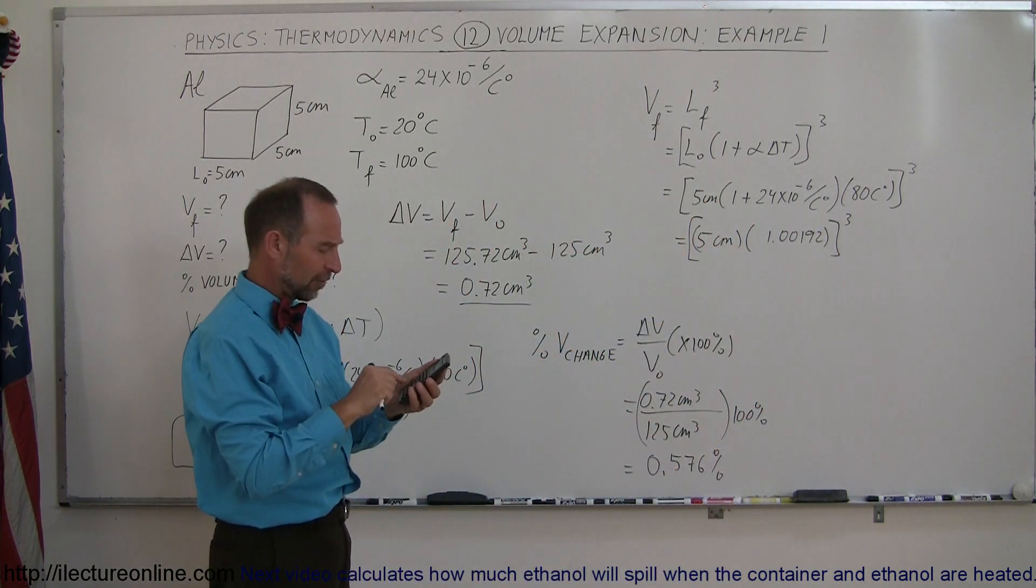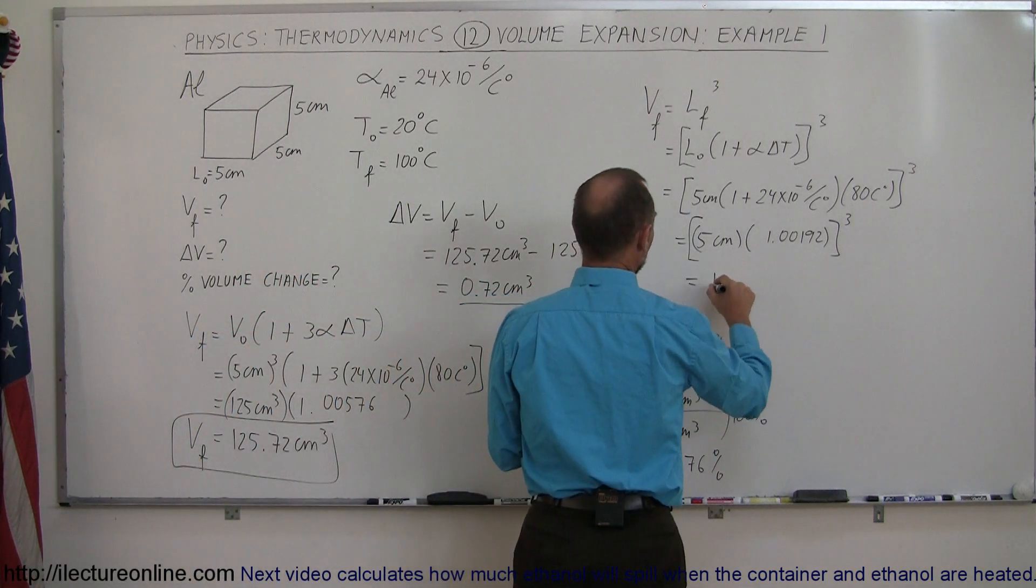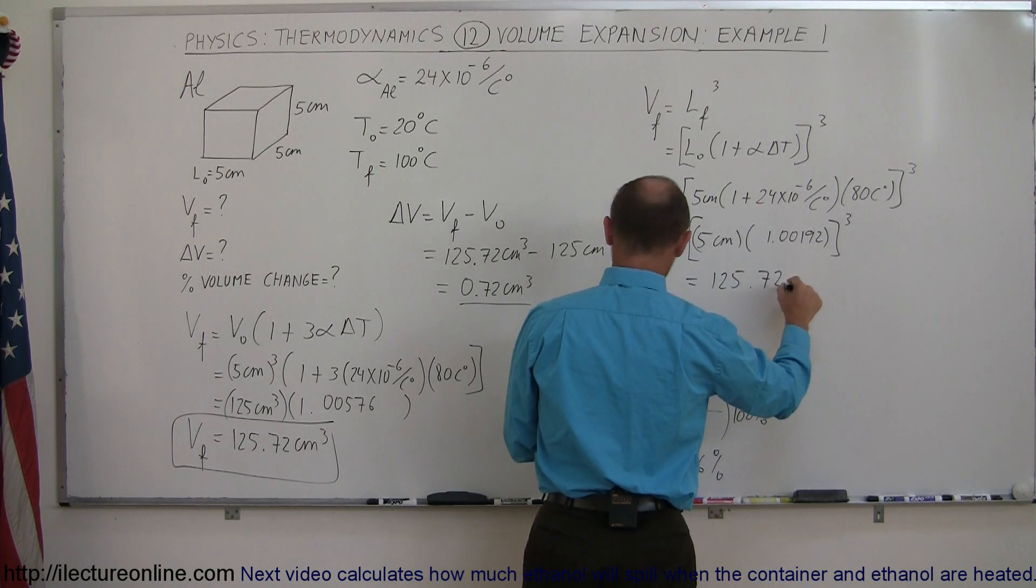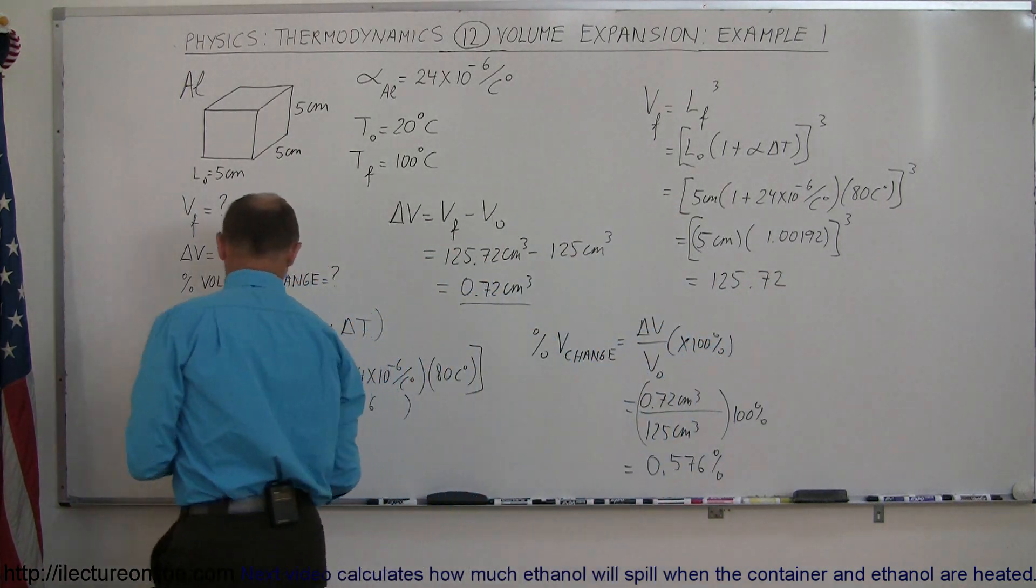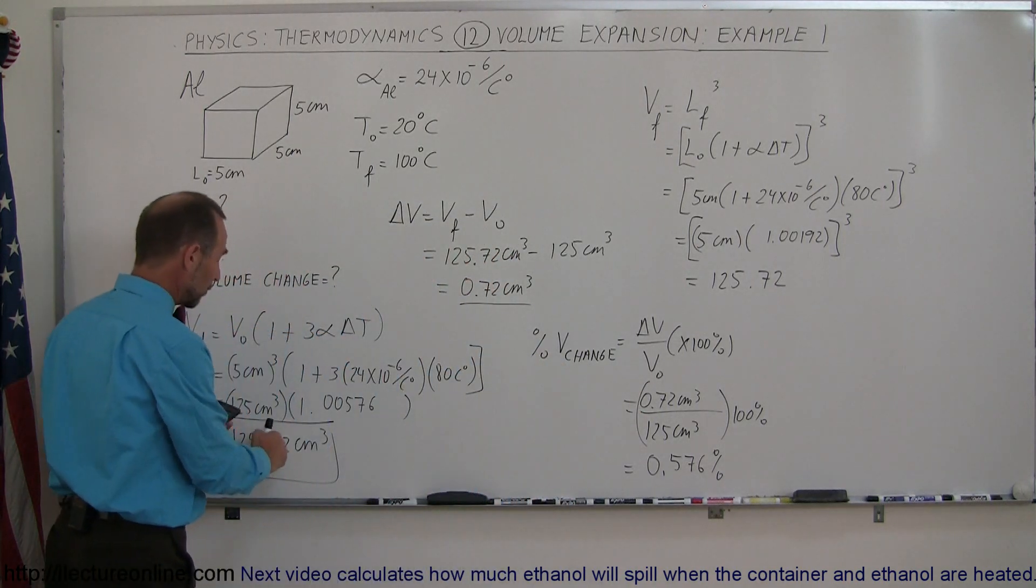All right, so multiply times 5, and then we cube it. And we get, as an answer, 125.72, I guess we had two significant figures here, two significant figures, but this was an exact value, this was 7, 2.